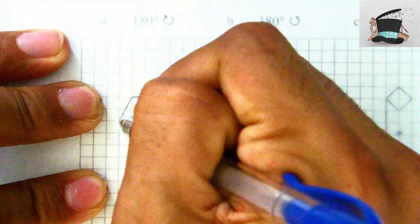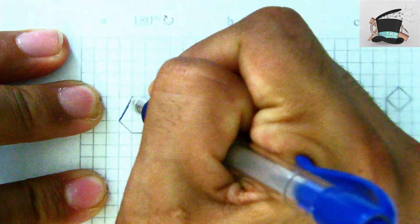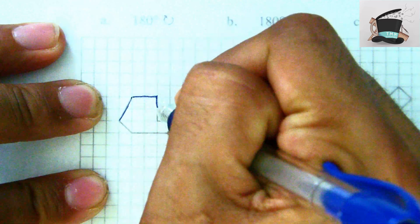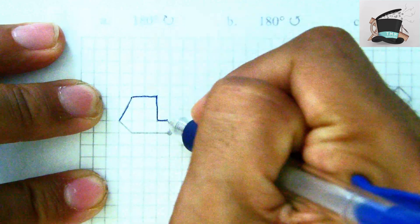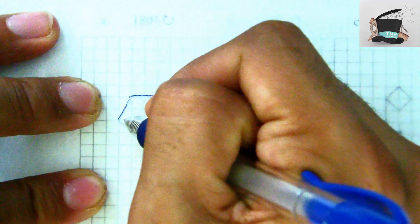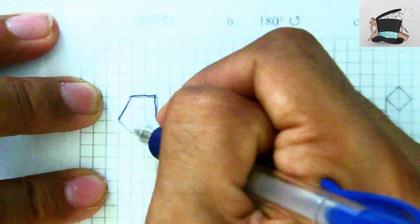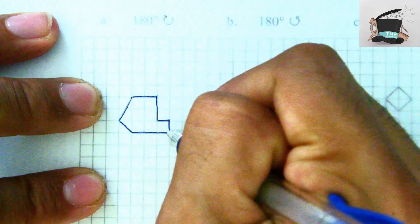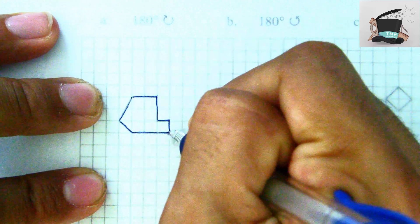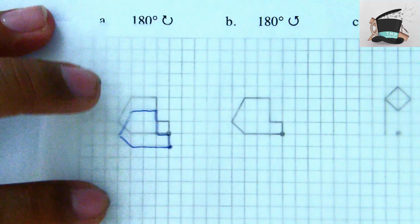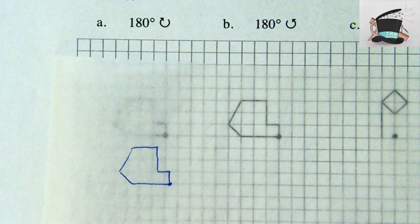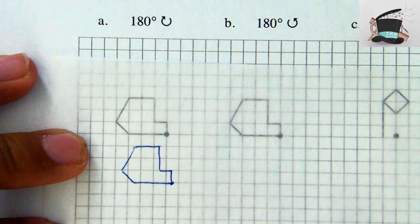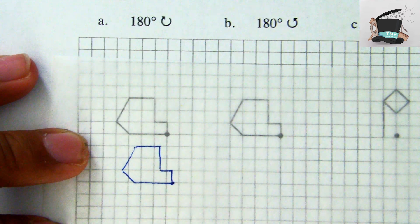I'm going to trace that same object onto my tracing paper so I end up with an exact copy of it. Take some time — you really want to make sure you're drawing it out exactly right so that you end up with the exact same shape, but now on your tracing paper.